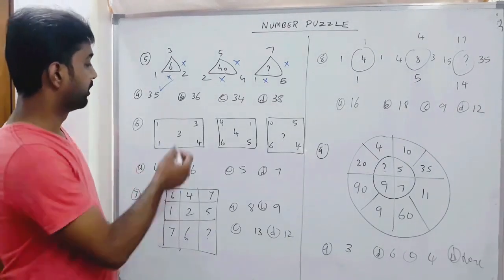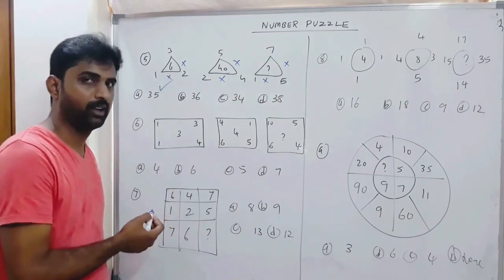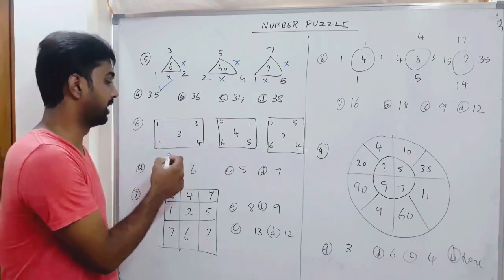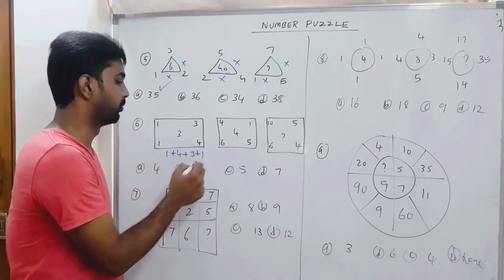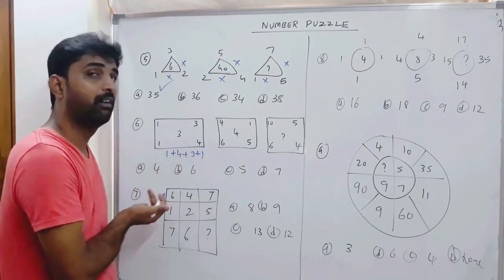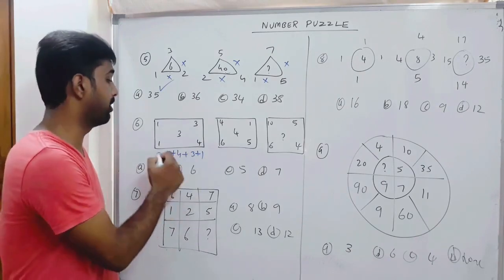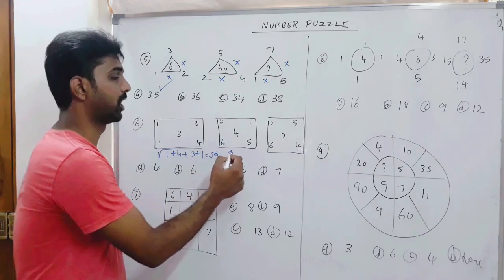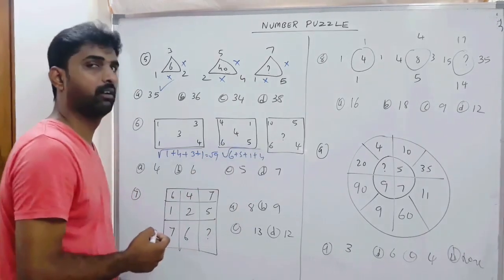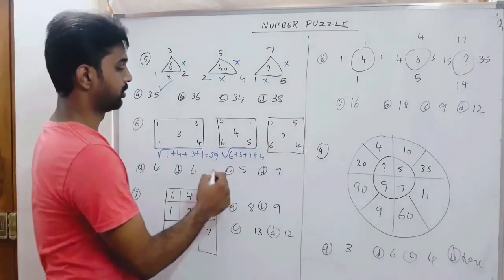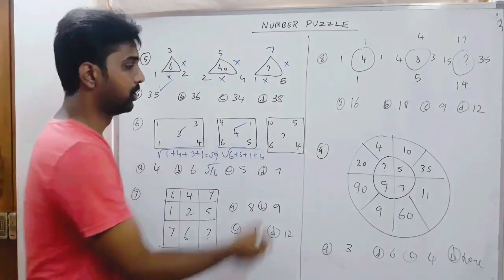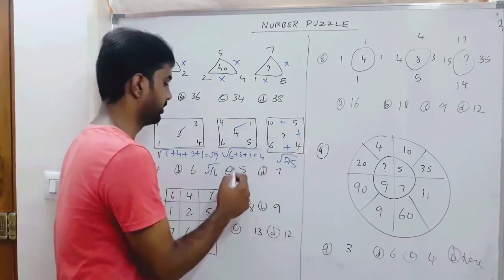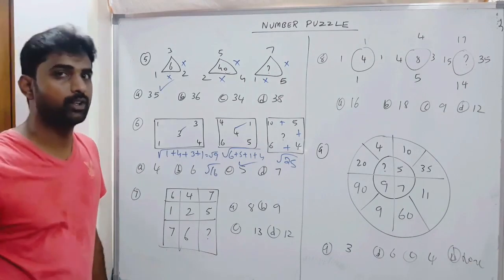Likewise if you go and look at these numbers, everything is 1 digit. If everything is 1 digit, use addition or square root. So: 1 plus 4 is 5, 3 plus 1 is 4, 1 plus 4 is 5, 5 plus 3 is 8, plus 1 is 9. Then continuing: 10, 15, 25 — square root of 25 is 5. You can easily solve it.